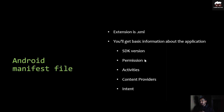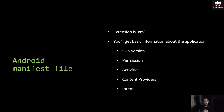For the Android manifest file, the extension is XML. You will get basic information about the application like the SDK version which that APK is using, the permissions required from the hardware component of your device, and any runtime permissions. This file will have all the permissions and parameters required. Next are activities — if you want to switch from one UI to another, that is called an activity.